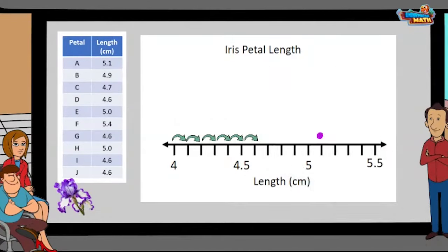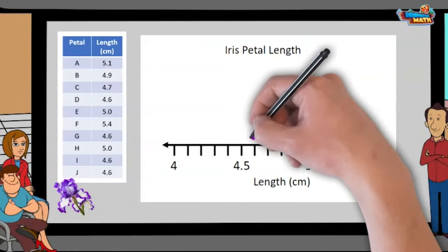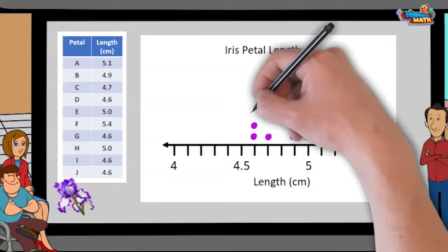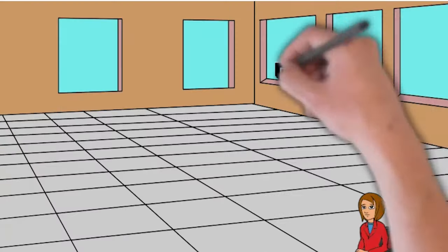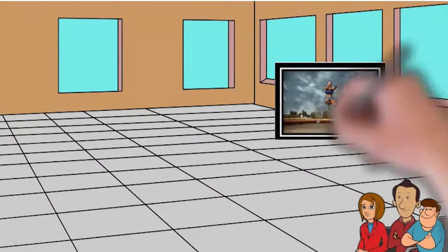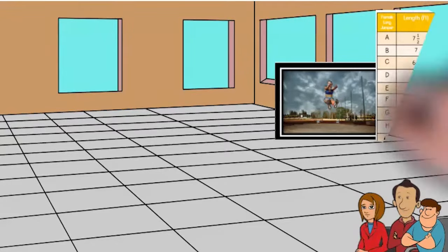Put the circle there. You too, finish out the rest of the data points. One last problem, here are the measurements from a women's long jump competition.